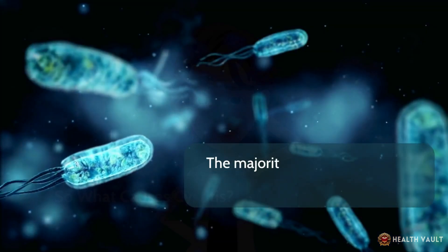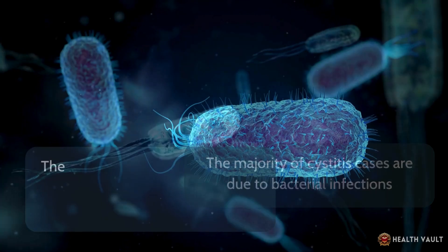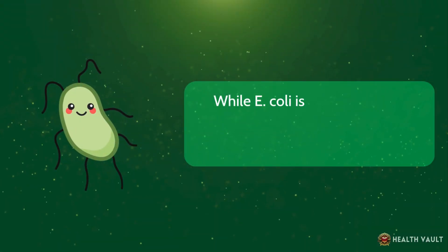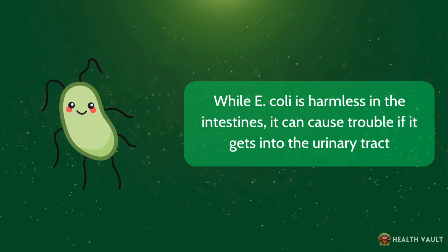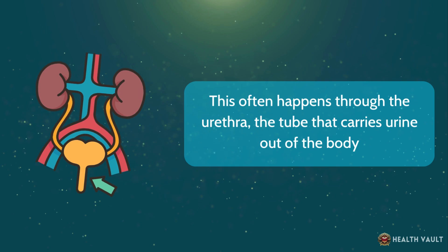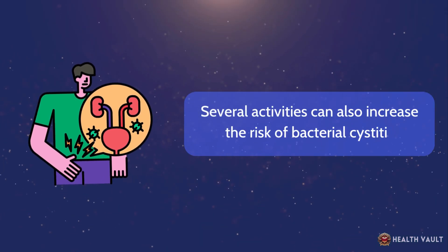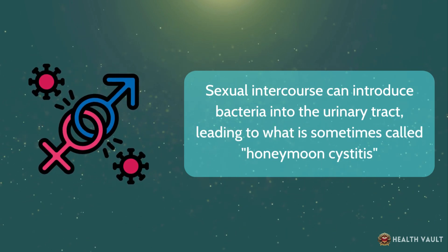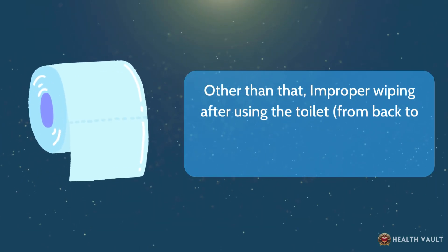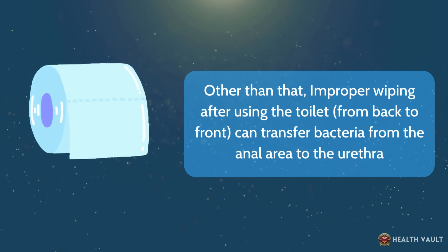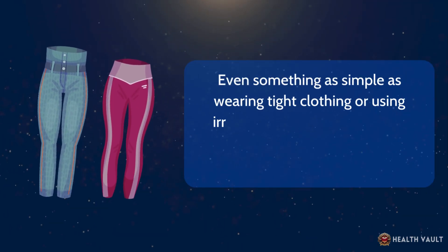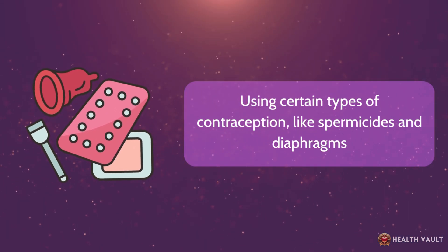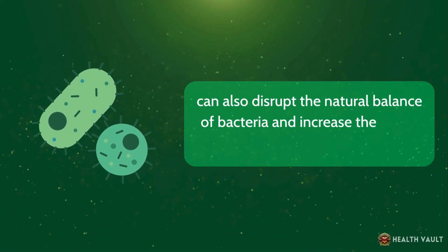The majority of cystitis cases are due to bacterial infections. The main cause is Escherichia coli, or E. coli, which is commonly found in the gastrointestinal tract. While E. coli is harmless in the intestines, it can cause trouble if it gets into the urinary tract through the urethra. Sexual intercourse can introduce bacteria into the urinary tract, leading to what is sometimes called honeymoon cystitis. Improper wiping after using the toilet — from back to front — can transfer bacteria from the anal area to the urethra. Even wearing tight clothing or using irritating hygiene products can increase the risk, as can certain types of contraception like spermicides and diaphragms, which can disrupt the natural balance of bacteria.